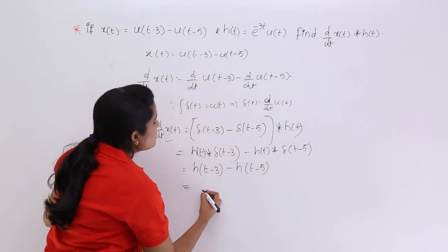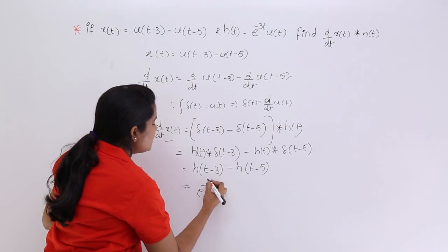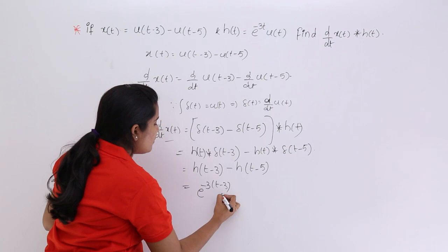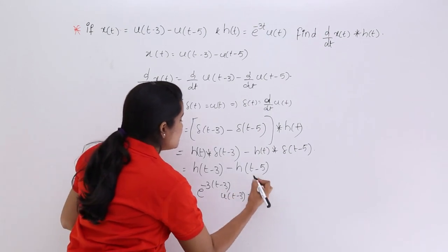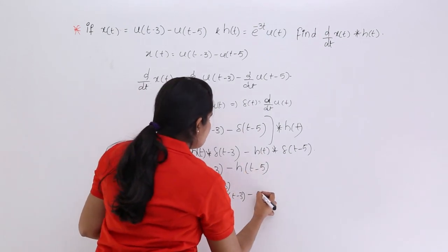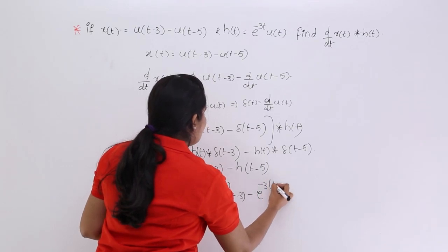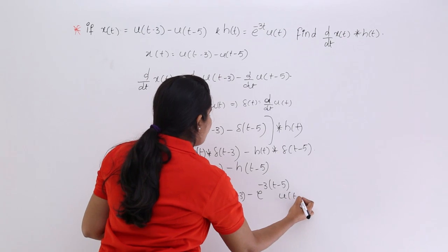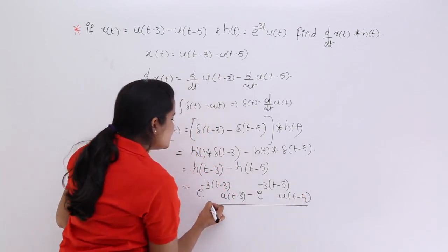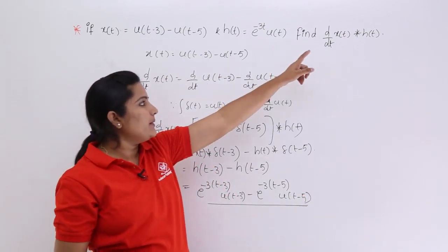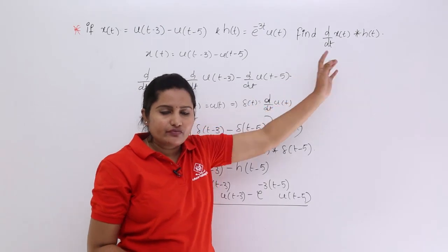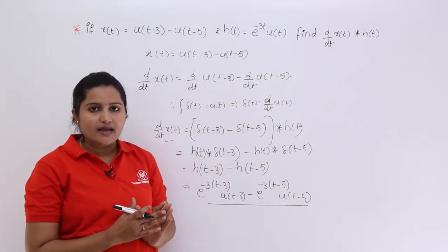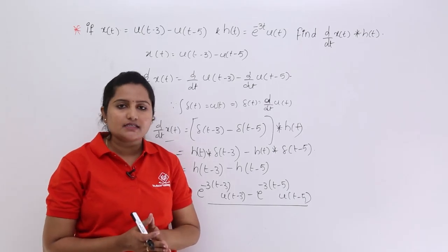Writing out the final answer: h(t-3) = e^(-3(t-3))u(t-3), and h(t-5) = e^(-3(t-5))u(t-5). So the result of d/dt of x(t) convolved with h(t) is e^(-3(t-3))u(t-3) minus e^(-3(t-5))u(t-5). This is how you solve this type of problem using the properties of convolution.